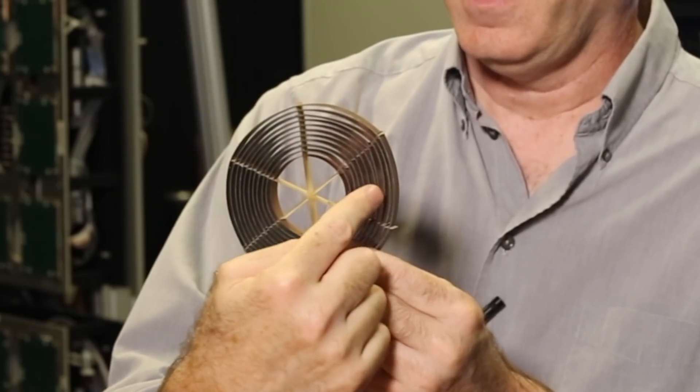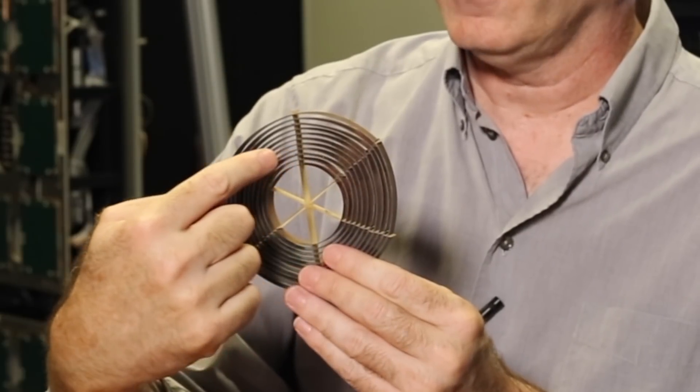There are no materials which do this in nature. You have to have a material which, when light enters it, it bends the wrong way.